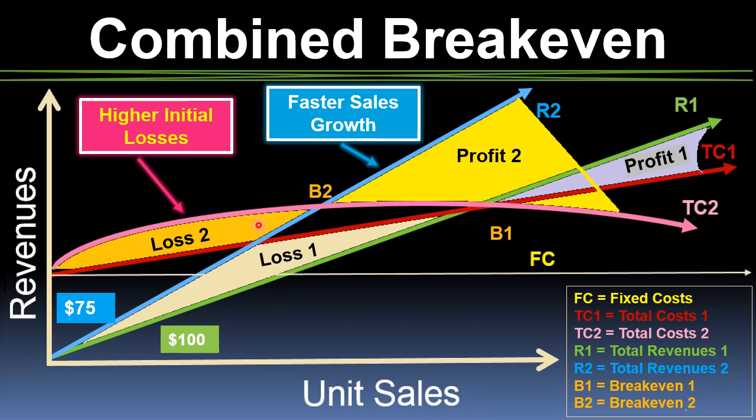This last chart combines both the traditional break-even chart with the forward pricing break-even chart. You can see the idea that you may incur bigger losses in the near term, but the revenue line may be higher and the total cost line lower, leading to more profits.